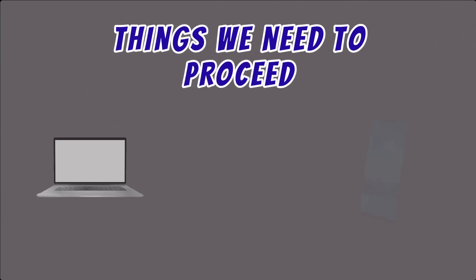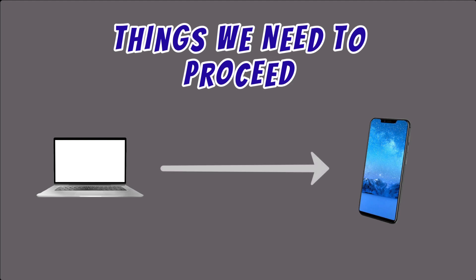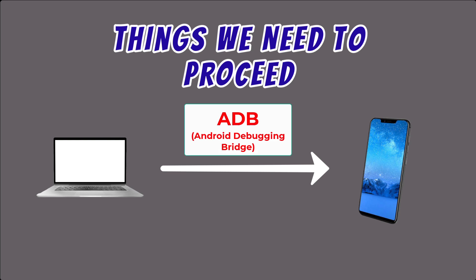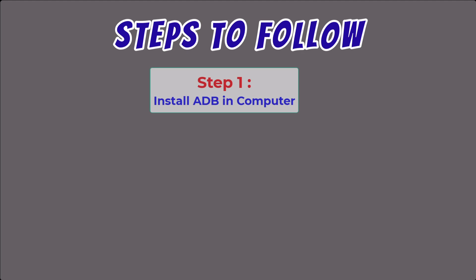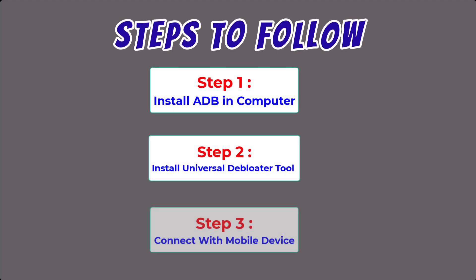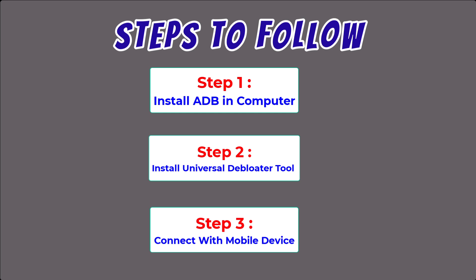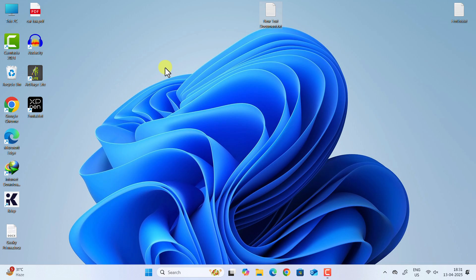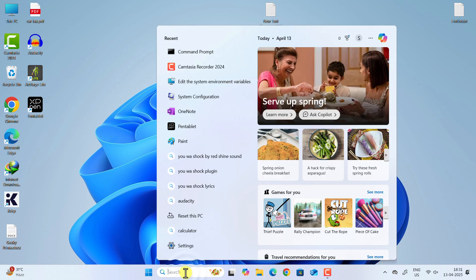The things we need to proceed are a laptop or computer and your mobile device. To connect both devices we need ADB, or Android Debug Bridge. The first step is to install ADB on our computer, the second step is to install the Universal Debloater tool, and the third step is to connect our mobile device to our computer.